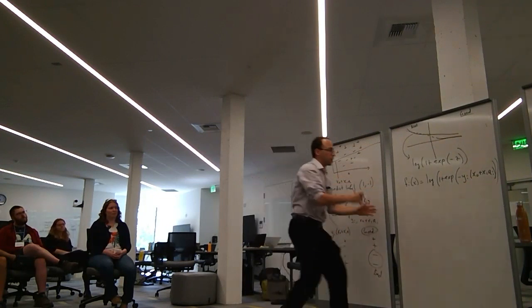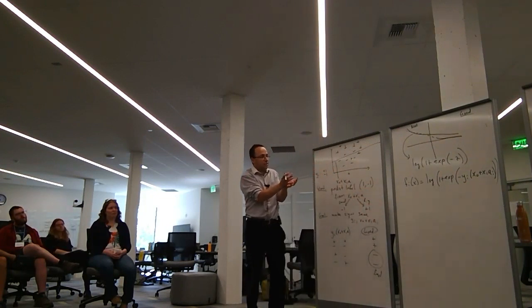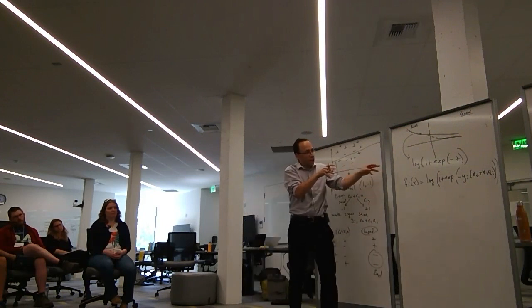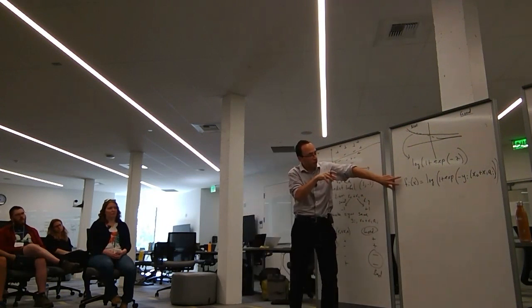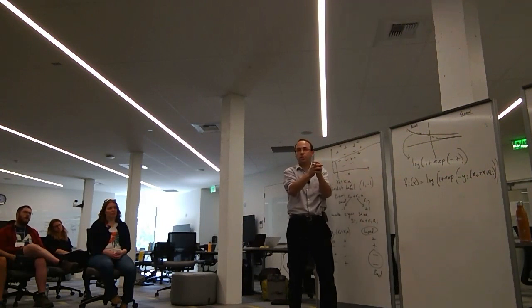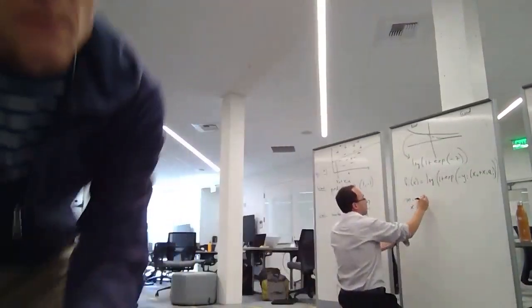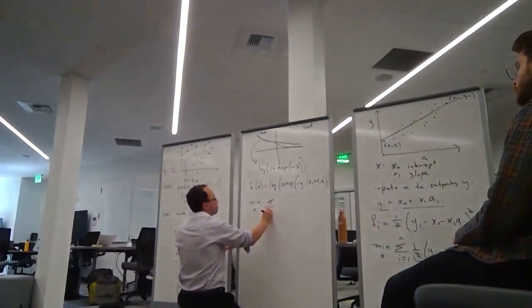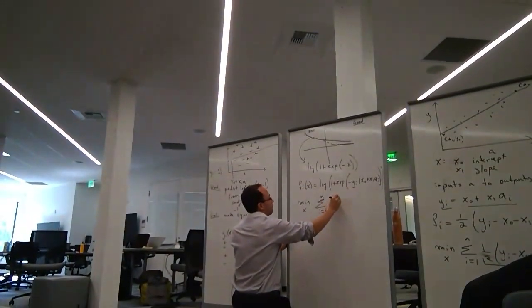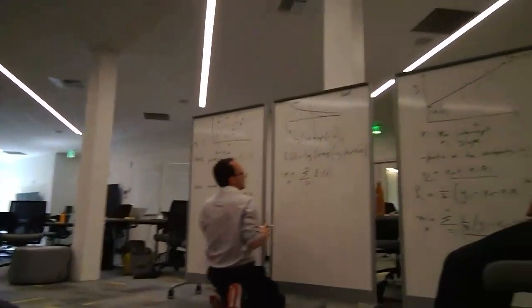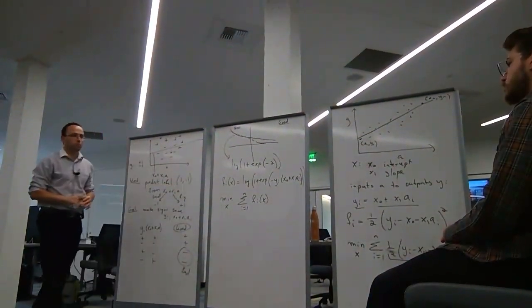So in each case, for every example in the training set, this function links the inputs to the outputs and pushes the signs to be exactly the same. The learning model is: minimize over X the sum i equals 1 to n of F_i of X.